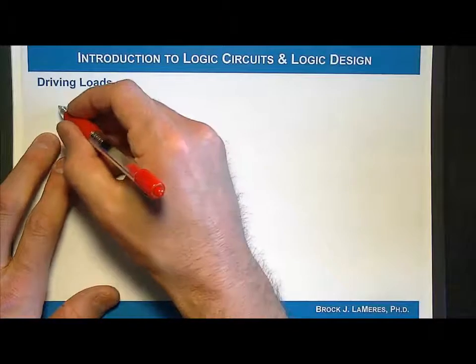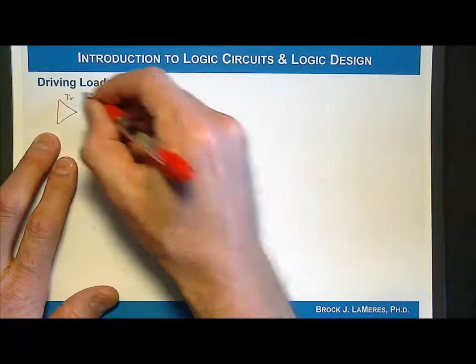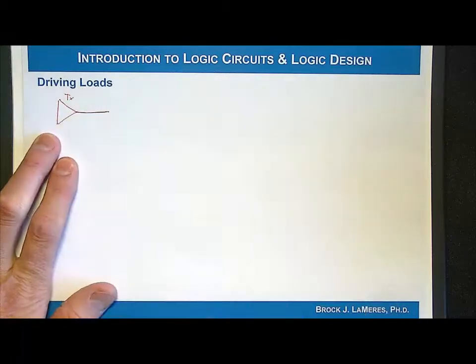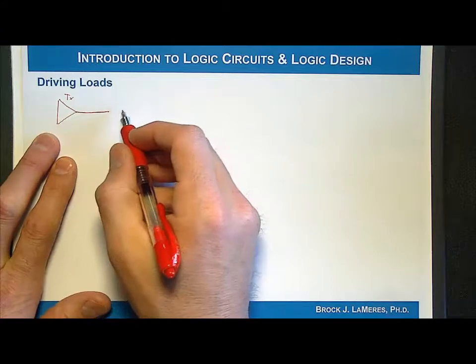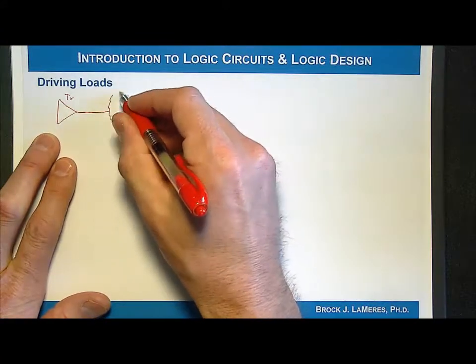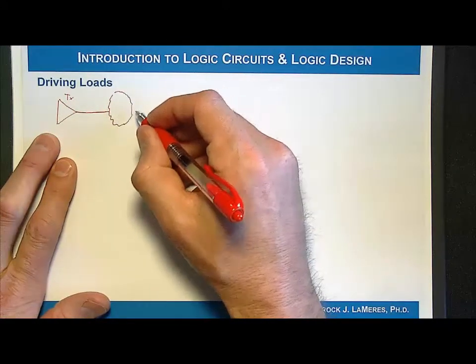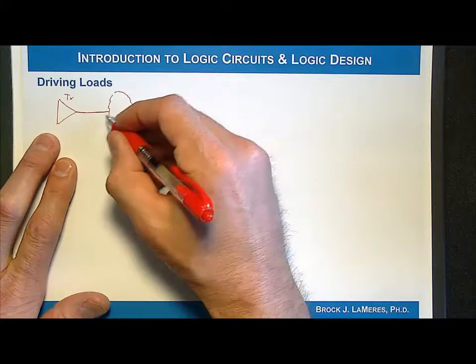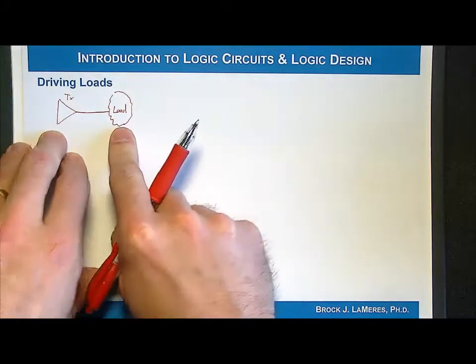Okay, so we're going to have some transmitter, and I'll just draw it as a simple buffer, and it's going to drive something. That's the point of this digital system—it's producing ones and zeros which are received by something else. So out here, whatever's on the load or whatever the receiver is, whatever's out here that you're driving, that is technically called the load. That's just the term that we use.